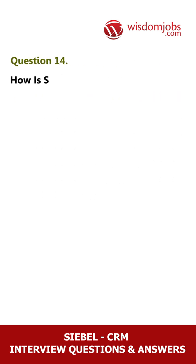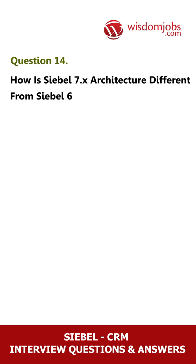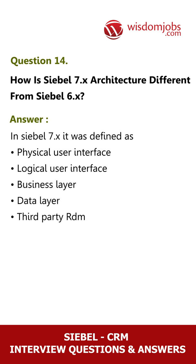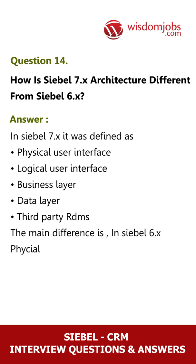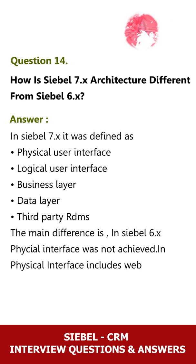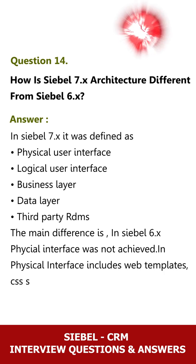Question 14: How is Siebel 7x architecture different from Siebel 6x? Answer: In Siebel 7x, the architecture is defined as physical user interface, logical user interface, business layer, data layer, and third-party RDMS. The main difference is that in Siebel 6x, the physical interface was not achieved; the physical interface in 7x includes web templates and CSS sheets.